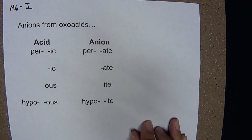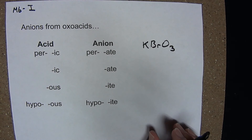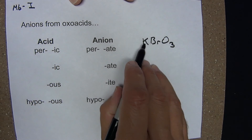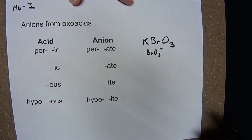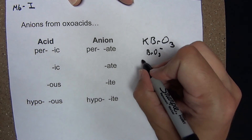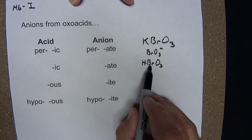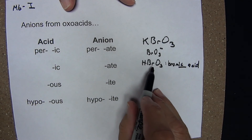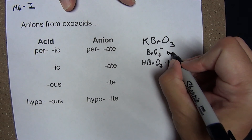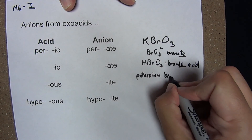Let's look at a few examples. For KBrO3, this is an ionic compound — I'm simply naming the ions. That's obviously potassium. For BrO3⁻, let's make the parent acid by adding one hydrogen: HBrO3. The oxidation state of bromine is plus 5; bromine is a halogen, so this makes it the ic acid — specifically bromic acid. If this is bromic acid, the daughter anion is the -ate anion, which means that was bromate. The name of this compound is therefore potassium bromate.